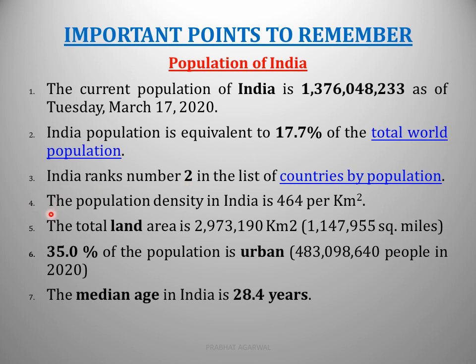Point number four: the population density in India is 464 per square kilometer. Density of population means on an average basis, how many people live per square kilometer in India. So in India, as of 2020, 464 people are living per square kilometer.